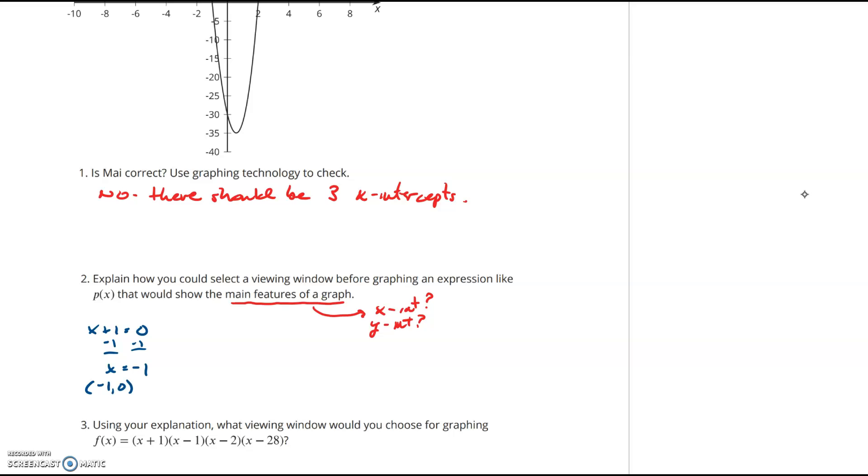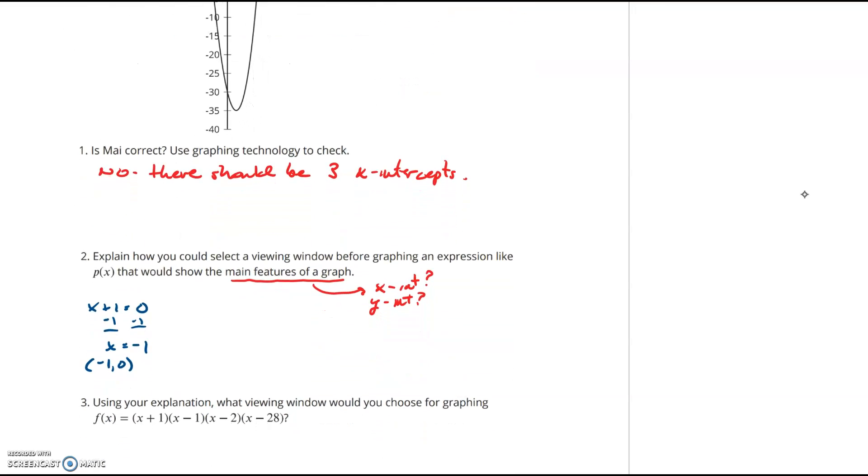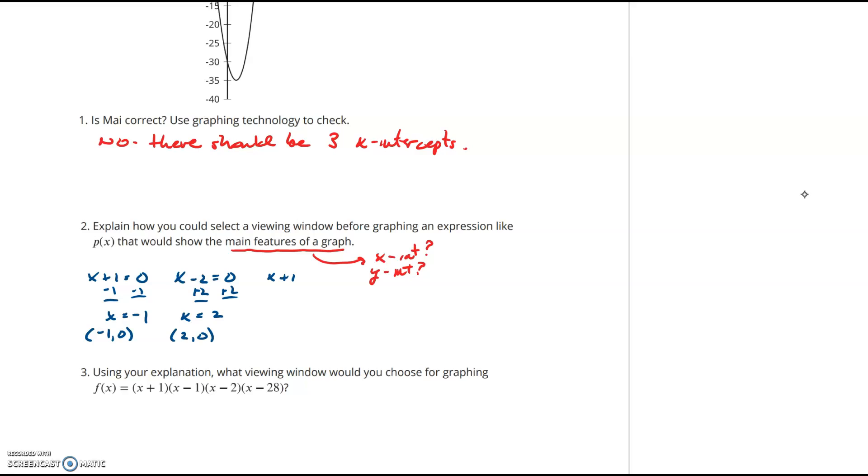Then we'll take the second factor, which is x-2, set it equal to zero, and solve. And I get x is equal to positive 2, so I should see an x-intercept at the point (2, 0). And lastly, we have a factor x+15, set that equal to zero, solve. And I get an x-value equal to negative 15, so then I should expect to see an x-intercept of (-15, 0).